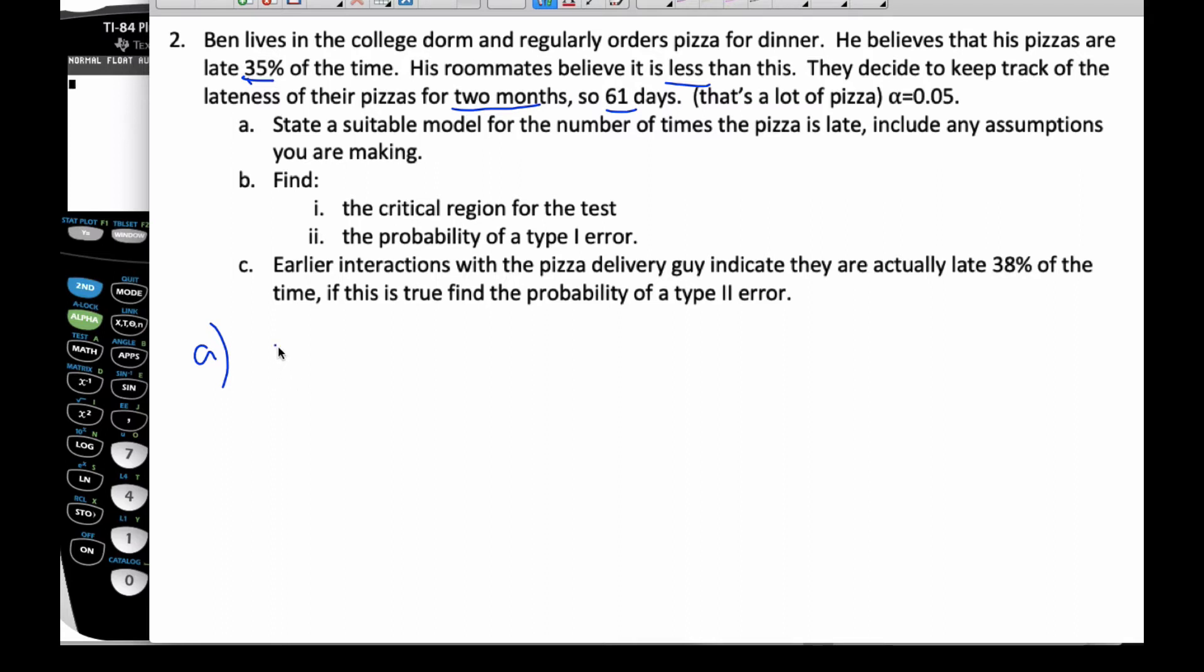If I introduce a random variable X, I know this is a binomial situation where I'm going to have 61 days of trials, and my probability of being late is 0.35. If I consider now a hypothesis test, I know the null hypothesis is going to be that the probability of pizzas being late is equal to 0.35.